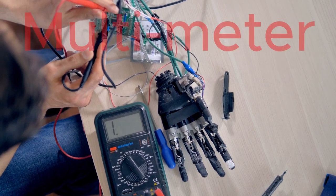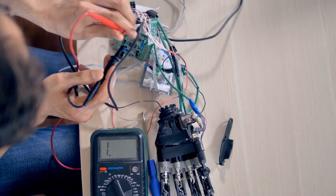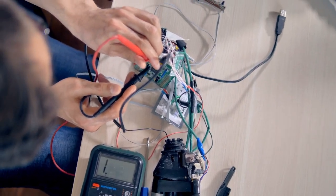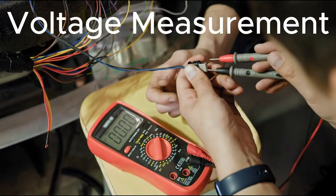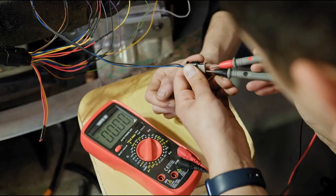At the core, a multimeter is a versatile diagnostic instrument. It can function as a voltmeter, measuring the voltage between two points in an electrical circuit. Voltage measurement is crucial for identifying whether an electrical system is receiving adequate power.